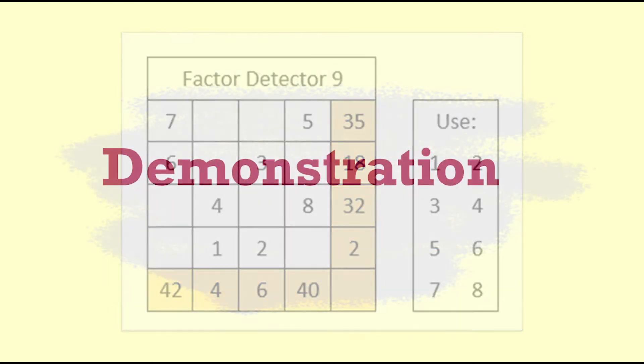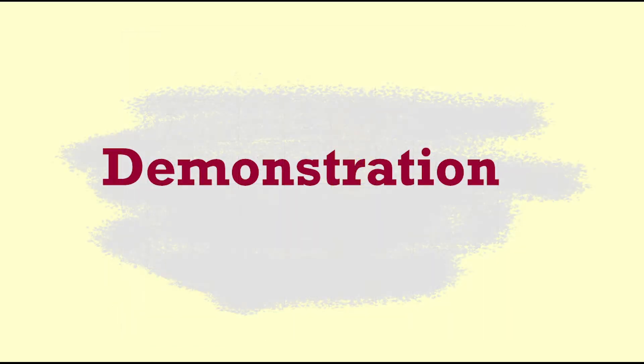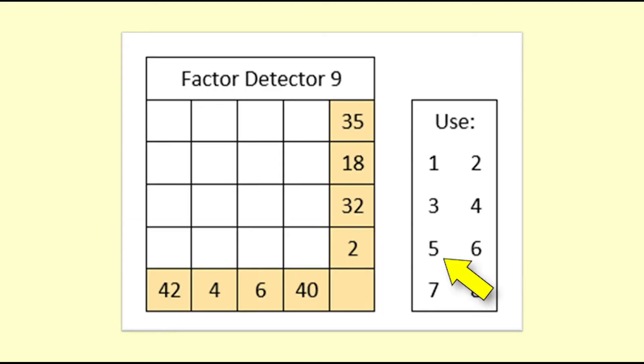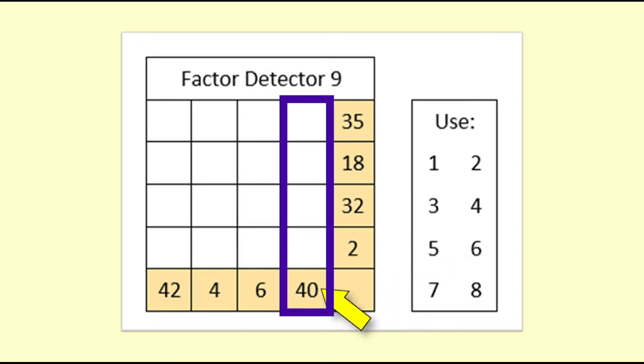Now we will work through how you might go about solving a Factor Detector puzzle. We will start by looking at where the 5 can go. I usually use 5 or 7 to start with. We can see that 5 goes evenly into 40 and into 35, but there are no other rows or columns the 5 could go in. 40 and 35 are the only multiples of 5 in the puzzle.